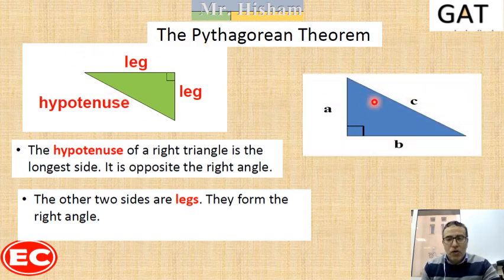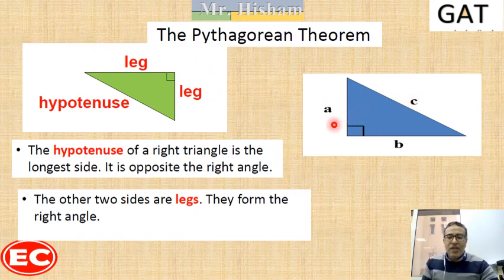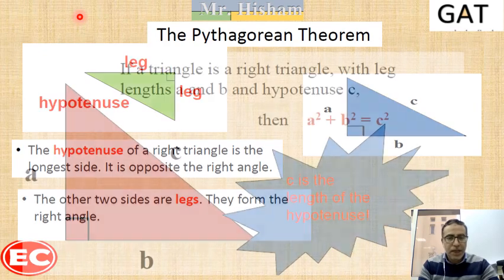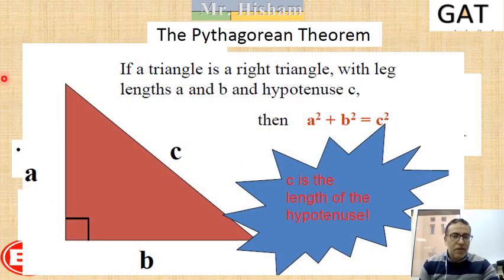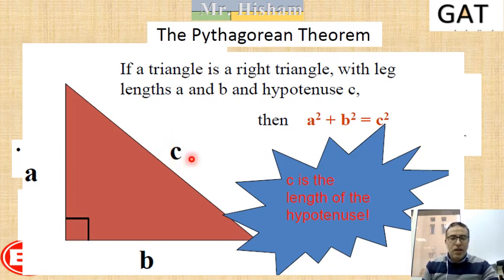In our theorem we are going to label the hypotenuse with the letter C, and the two legs with letters A and B. Generally, the Pythagorean theorem states that the square of the length of the hypotenuse is equal to the sum of the squares of the other two sides: A squared plus B squared is equal to C squared.